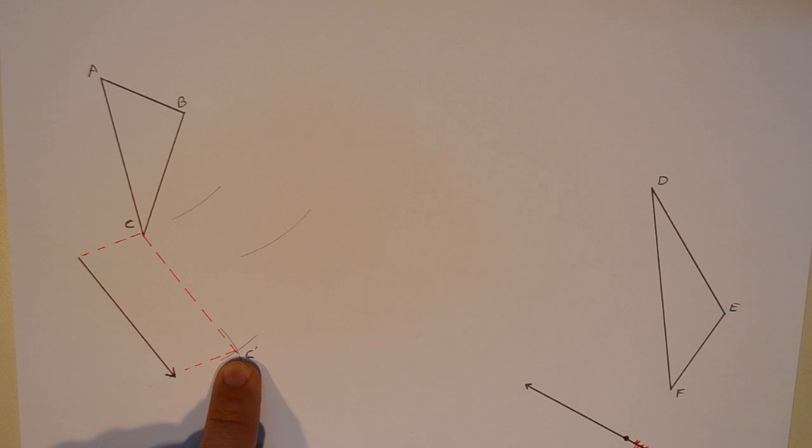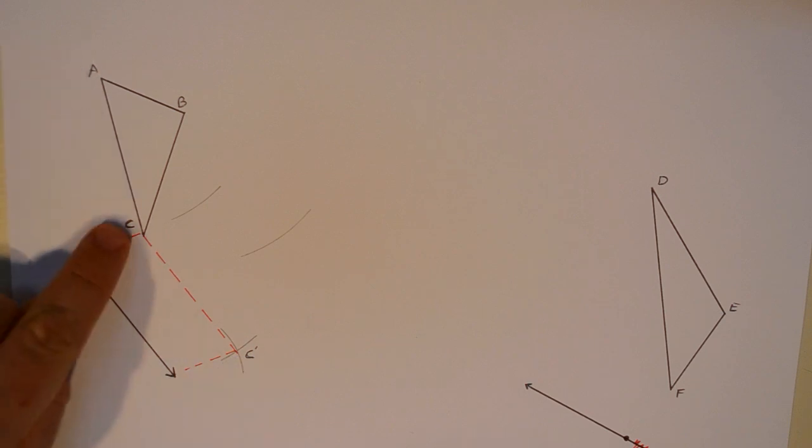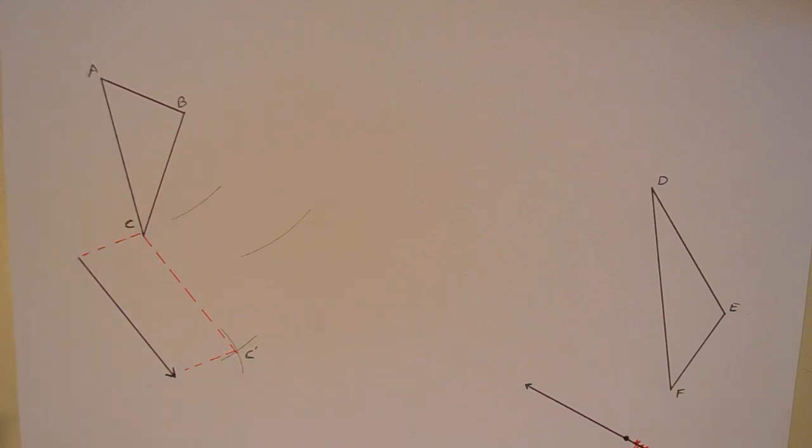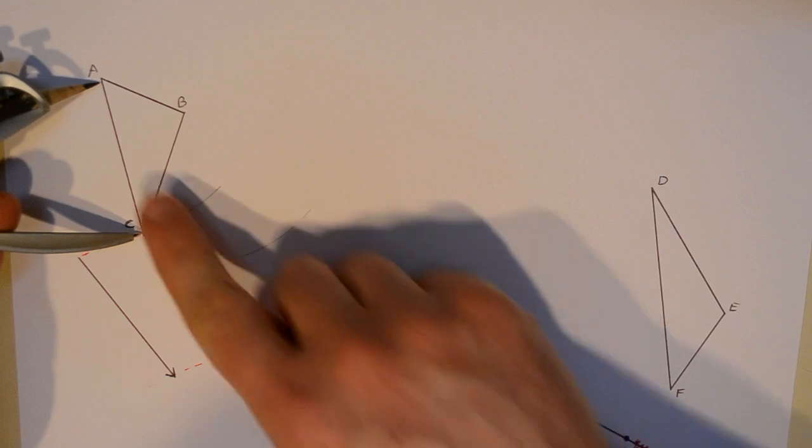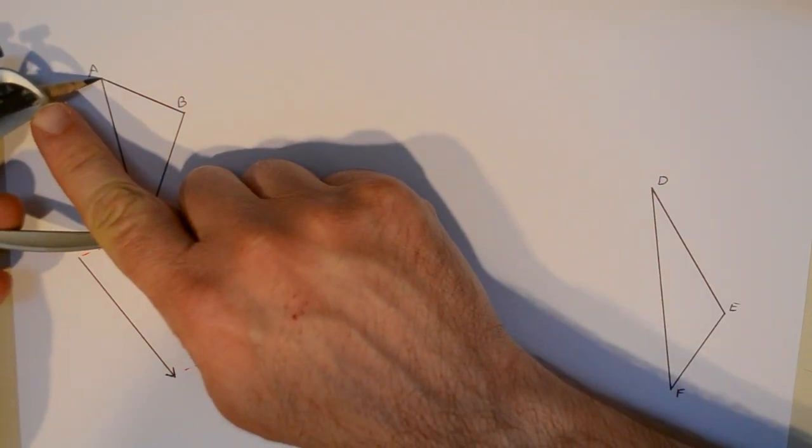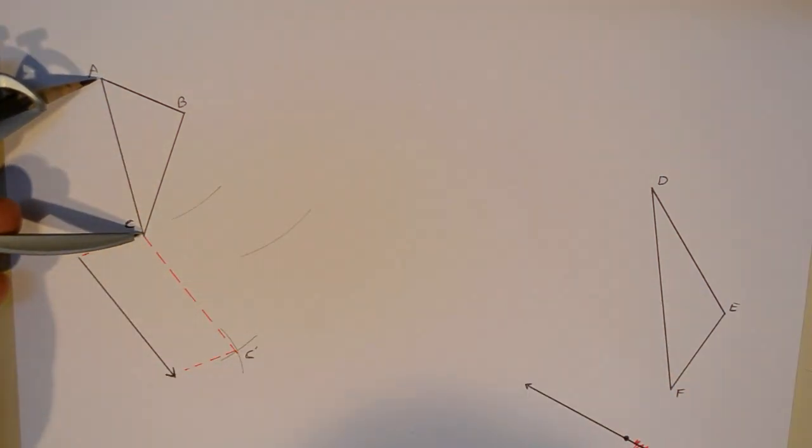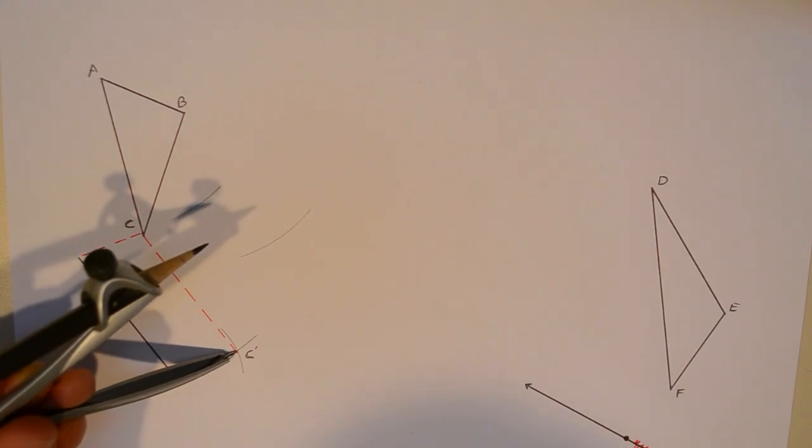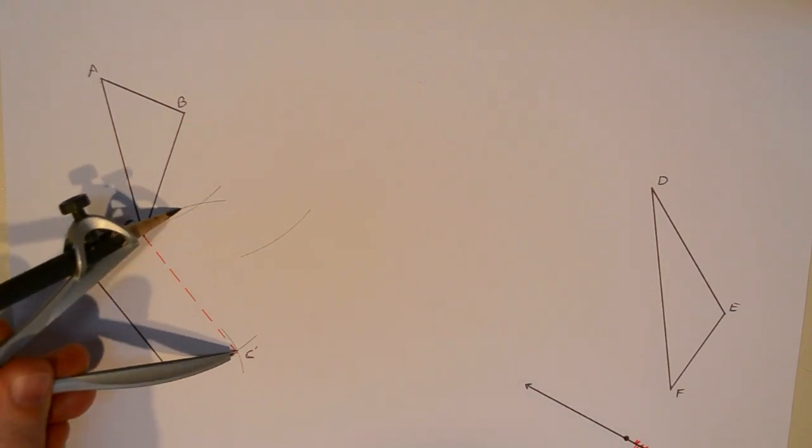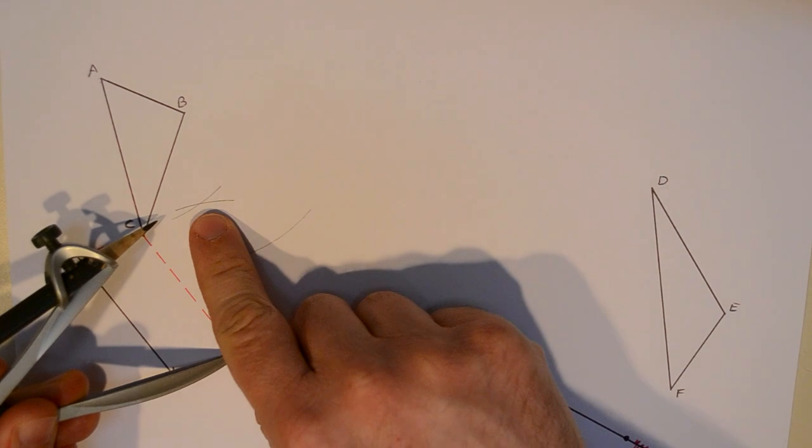Well, I know where C prime is and I know that the distance from A to C can't change during this construction because a translation is an isometry, same distance. So I'm going to measure from A to C. It's actually very close to the length of my vector in this case. So there's from A to C and I know that that distance from A to C has to be the same after the translation. So I go to C prime and that's going to tell me where A prime is right there.